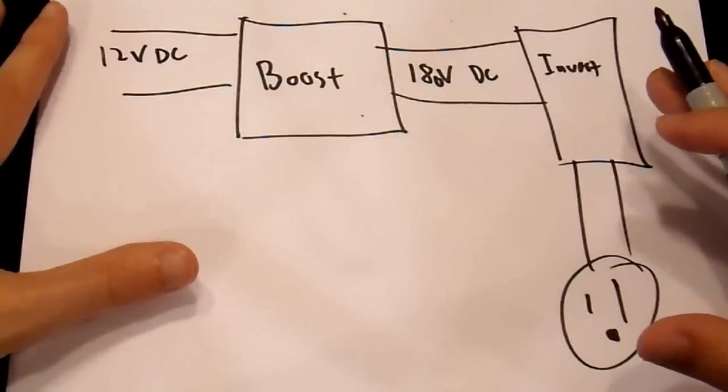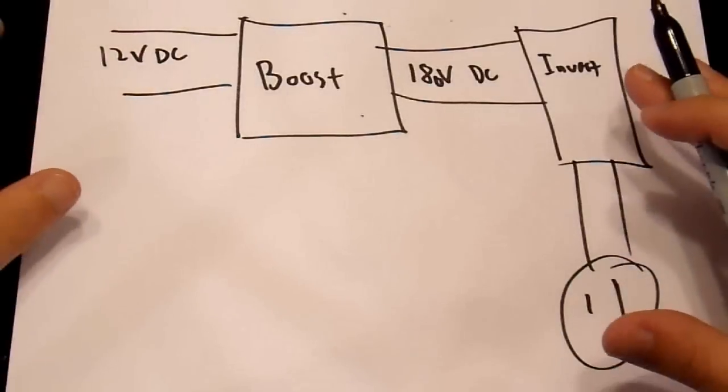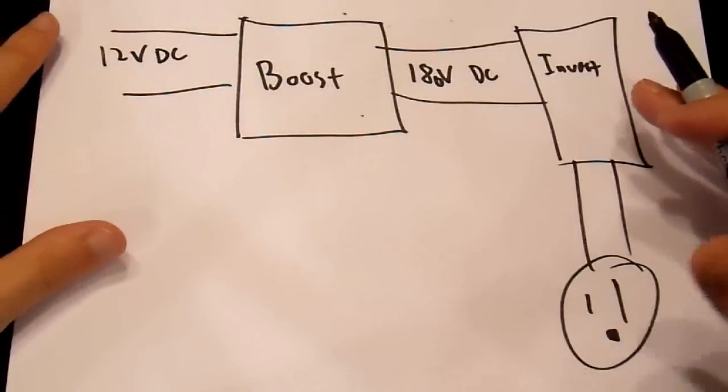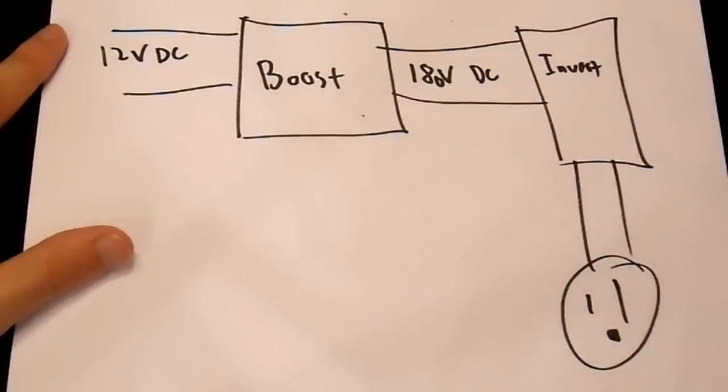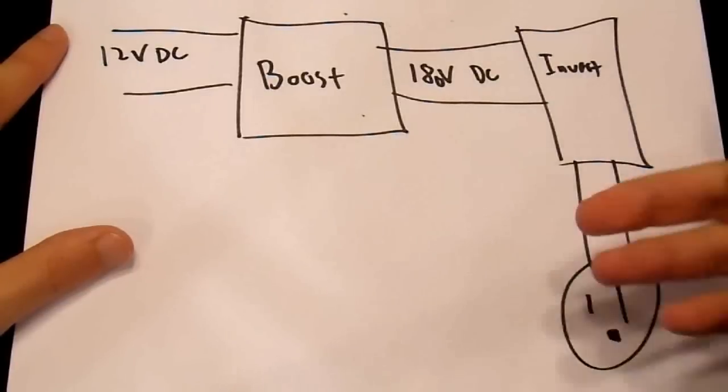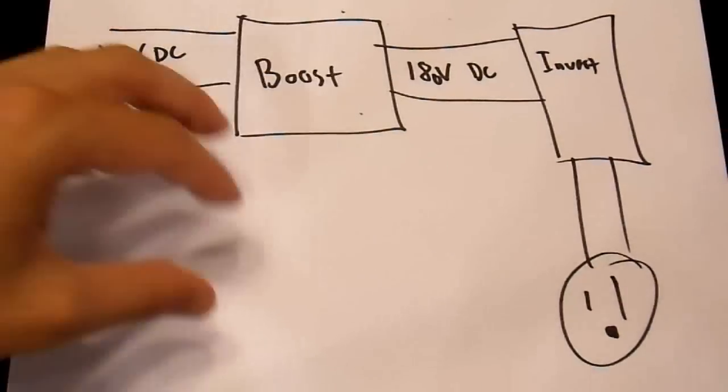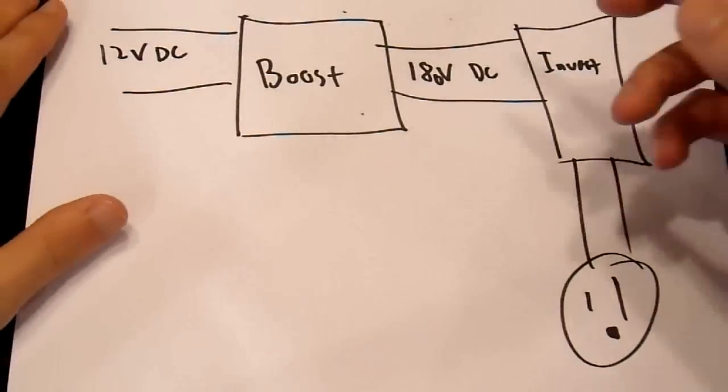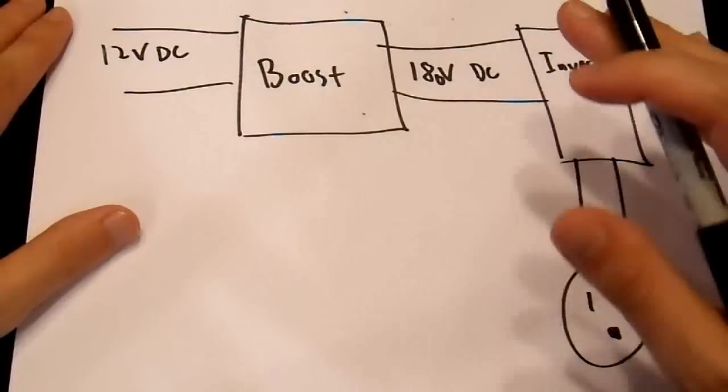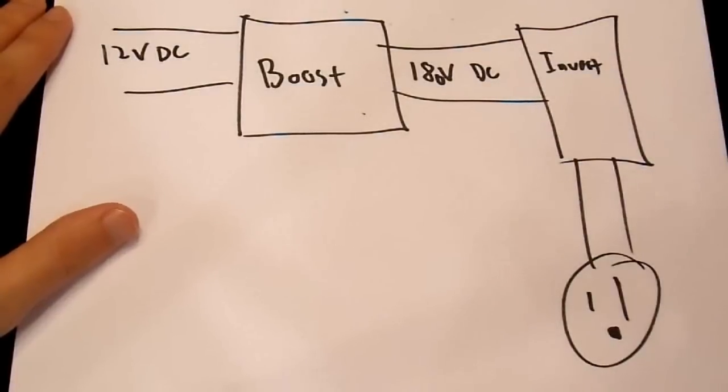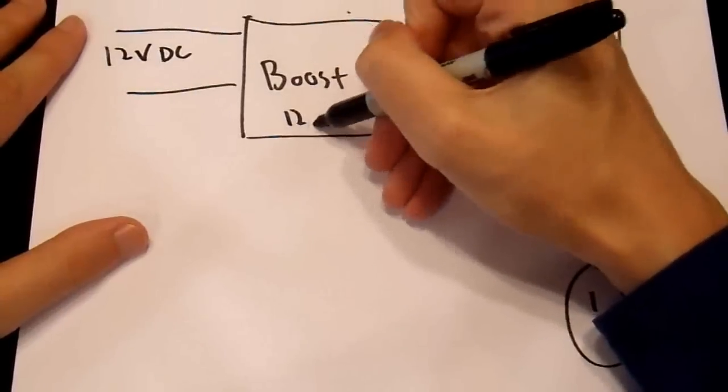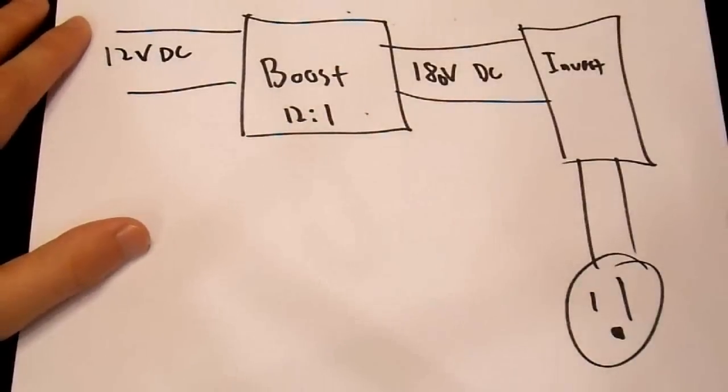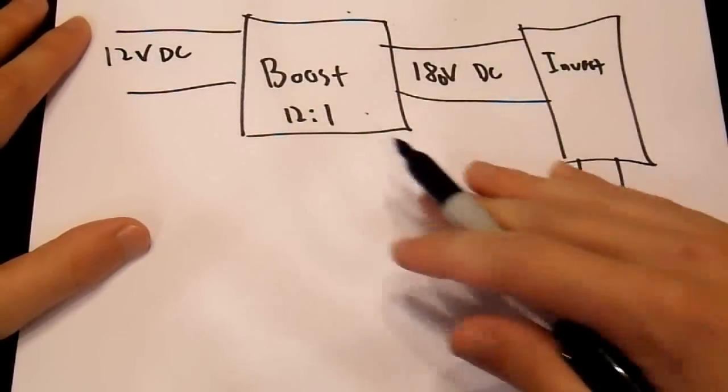So in a typical inverter that is not phase-corrected, you may get a, let's just call it a 12 to 1 boost in the boost stage. And this is fixed. And it doesn't change. It's just dumb. All it does is it runs. It runs off of some sort of fixed oscillator, and it just goes. That's all it does. It doesn't take any smarts.